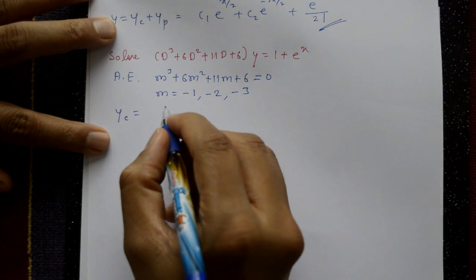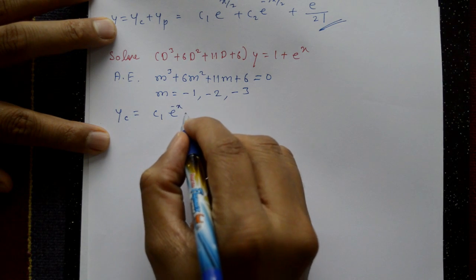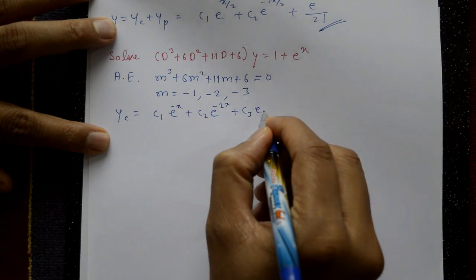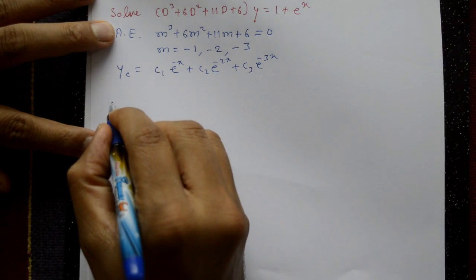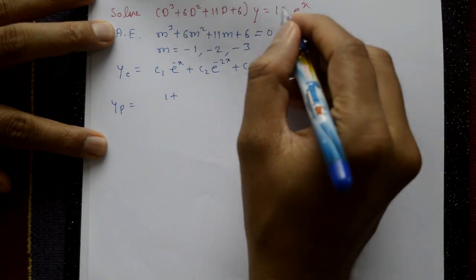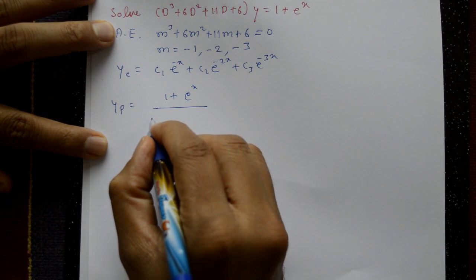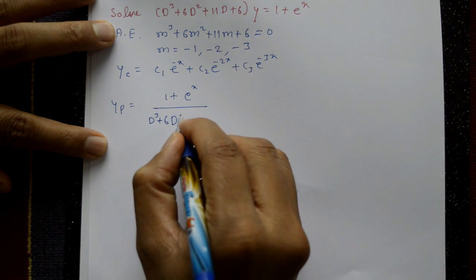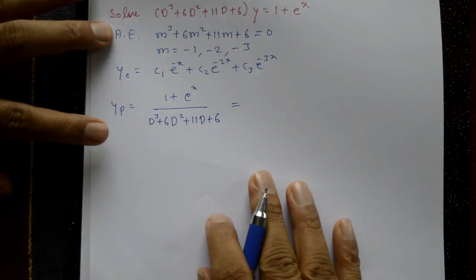The complementary function is: CF = c₁e^(-x) + c₂e^(-2x) + c₃e^(-3x). For the particular integral, the right-hand side is (1 + e^x), so yp = (1 + e^x) / (D³ + 6D² + 11D + 6). Now separate the two terms.